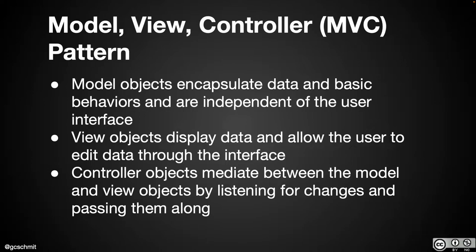Every application has three parts. There's the model — what is the data represented by our application? That's just the actual objects and their attributes. If we're writing a weather application, the model would be a city object with attributes like current temperature, current humidity, and current wind speed. That data isn't related at all to how we visually present it on the screen to the user — it's just the data of our objects.